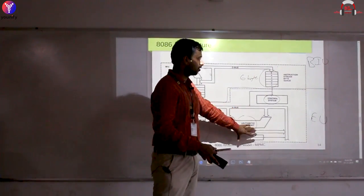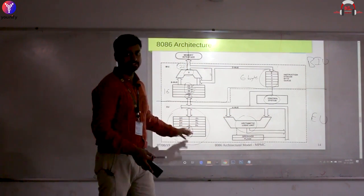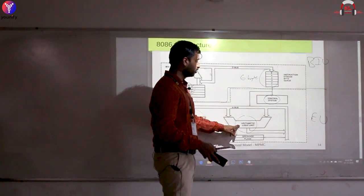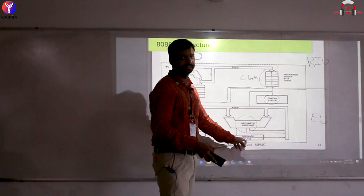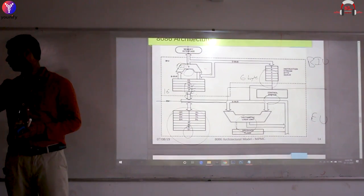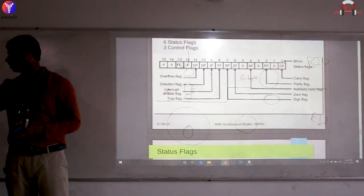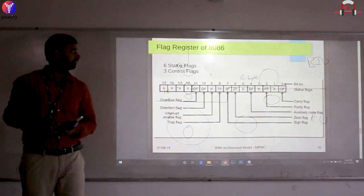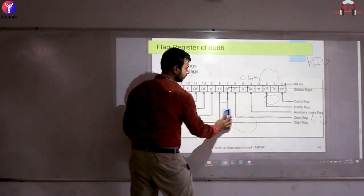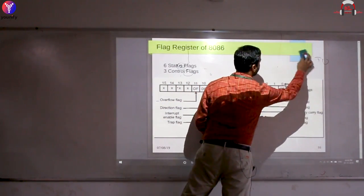In the Execution Unit, fetched code goes to the control system; data goes to registers or the ALU. The ALU processes data and produces results. The general purpose registers AX, BX, CX, DX, stack pointer, and index registers form the EU. ALU results are stored in the flag register, which is the last register in the architectural description.